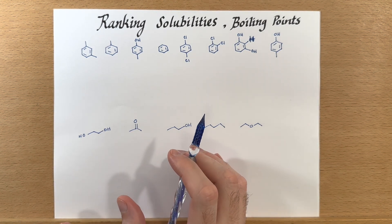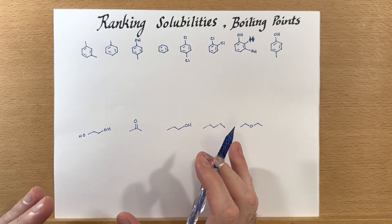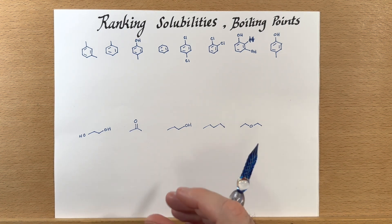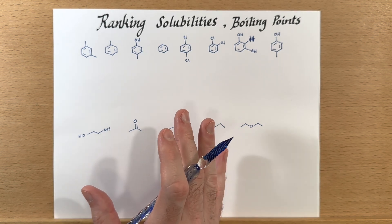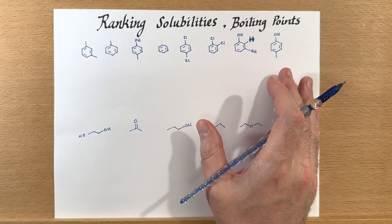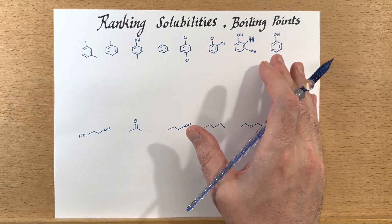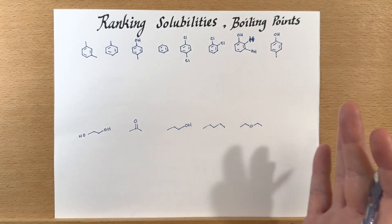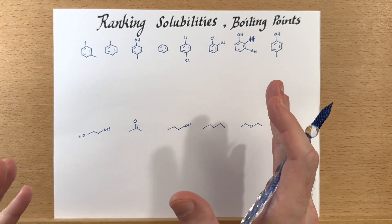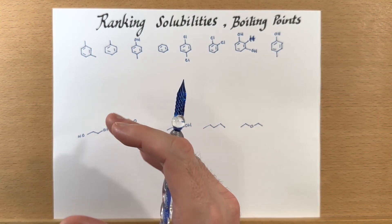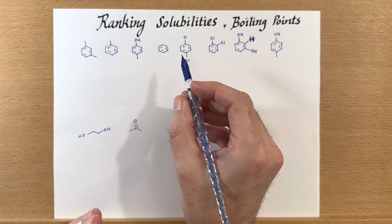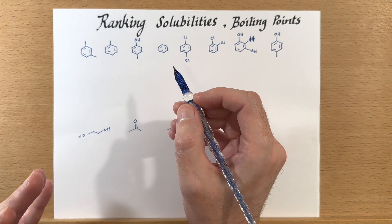Let's look at predicting boiling points and solubility in some solvents. In order to do this, we will need relatively similar structures. You'll notice that all of these structures have a benzene ring and they all weigh somewhere about the same amount, and so that will help us to predict the boiling point. When we're looking at this, we'll need to pick out which molecules have what kind of intermolecular forces.